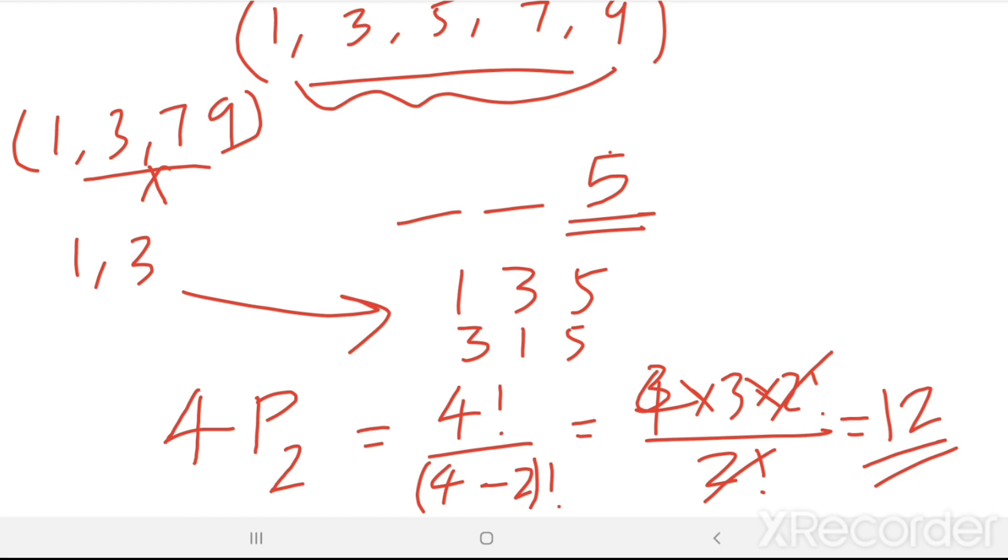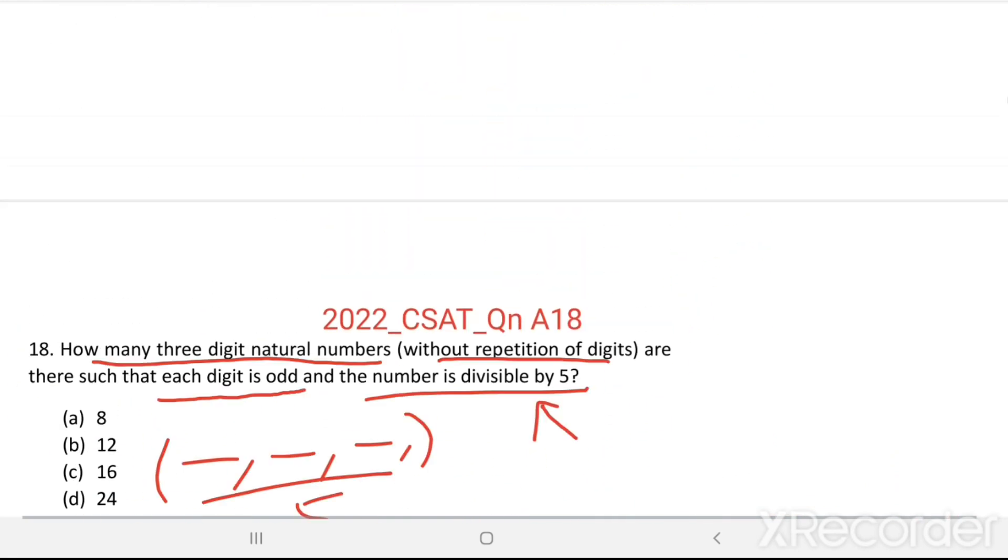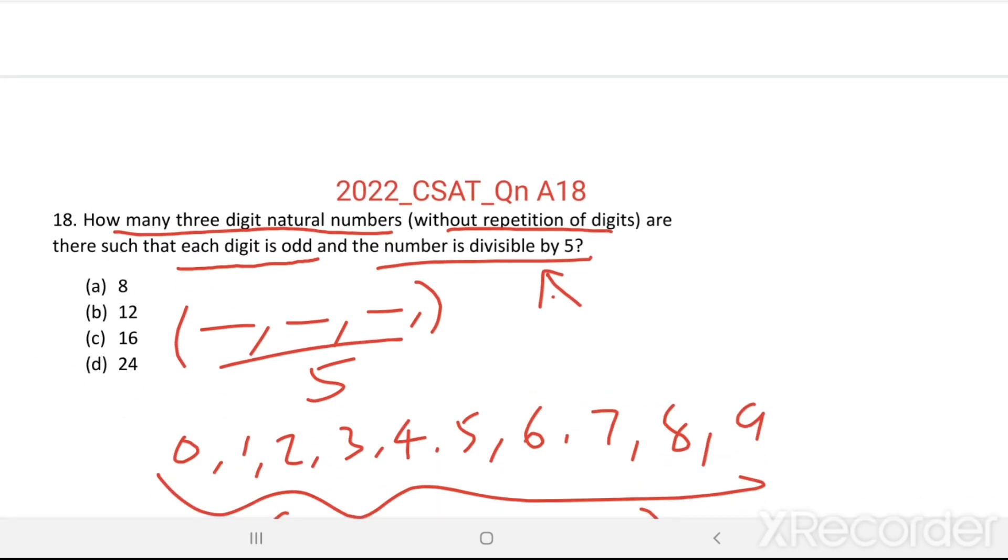So there are 12 three-digit numbers whose digits are odd and the number is divisible by 5. Option B is the right answer.